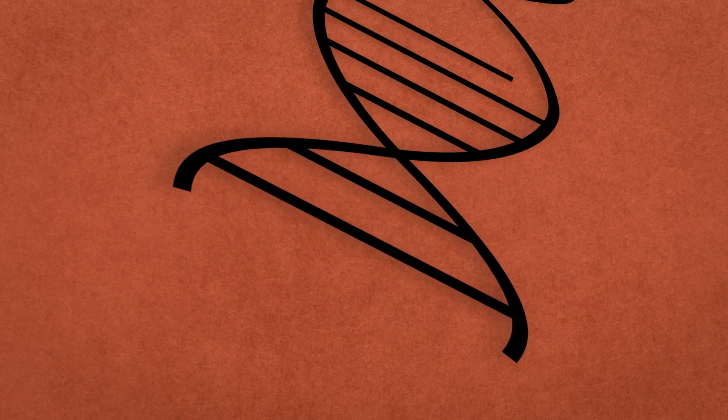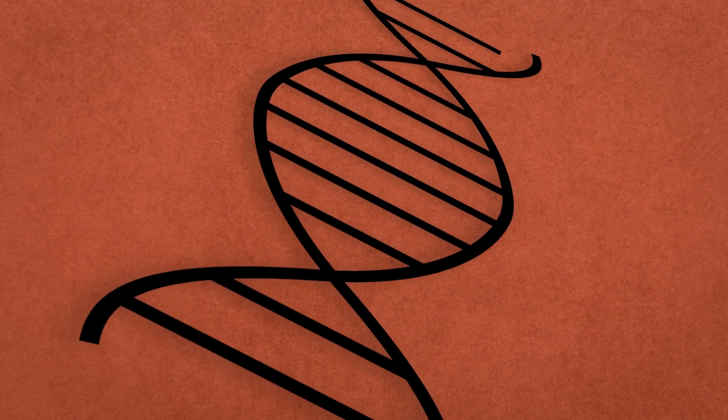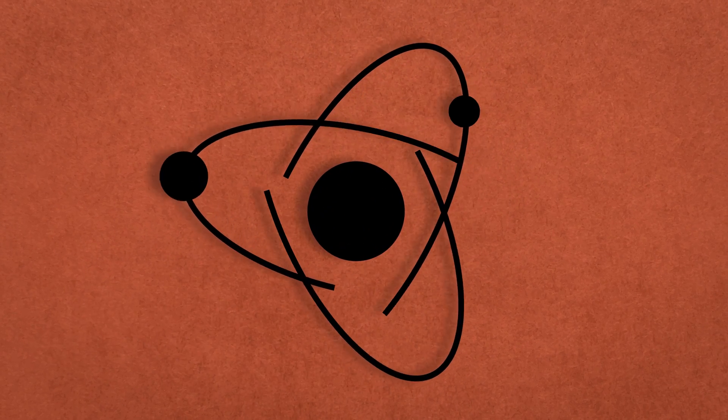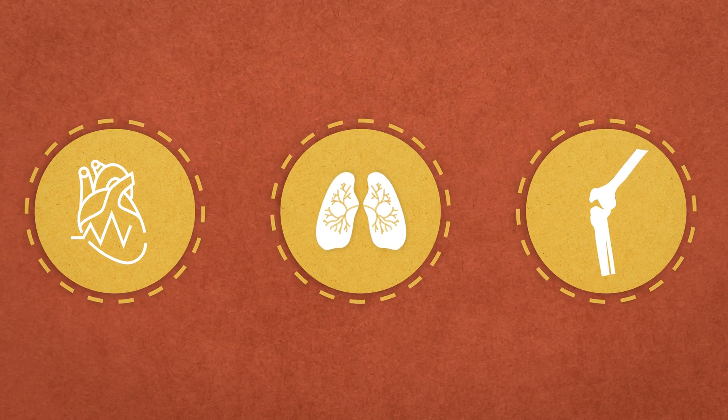By unraveling the pathways that control organ size and growth, and screening for molecules that could repair tissue damage, chemical biologists are designing regenerative medicines that could restore heart cells, remodel scarred lung tissue, and even reverse osteoarthritis.